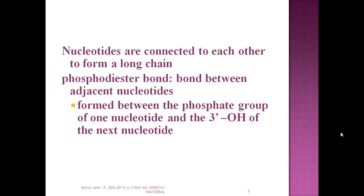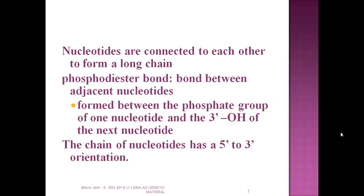Various bonds are present in the structure of DNA. One of them is the phosphodiester bond — the bond between adjacent nucleotides. There are two different words: nucleosides and nucleotides. Nucleoside plus phosphate forms nucleotide. The phosphodiester bond forms between the phosphate group of one nucleotide and the 3'-OH hydroxyl group of the next nucleotide. The chain of nucleotides has a 5' to 3' orientation.